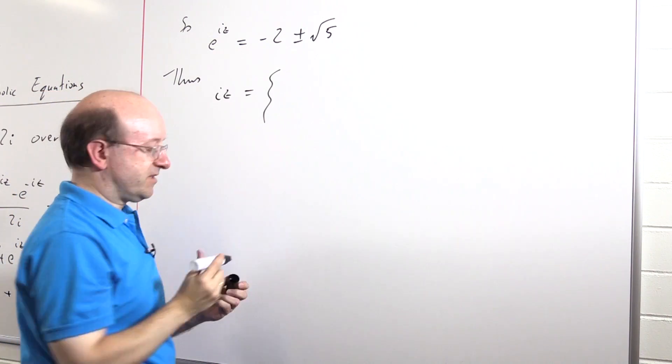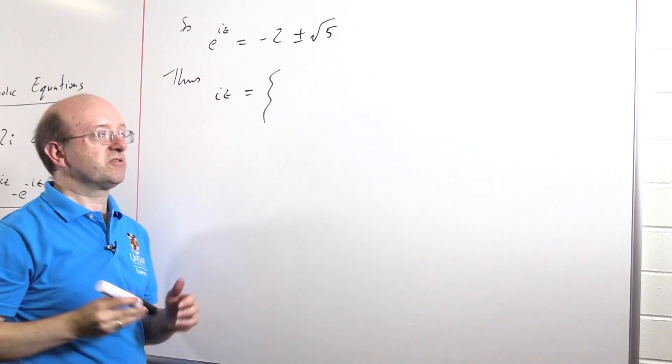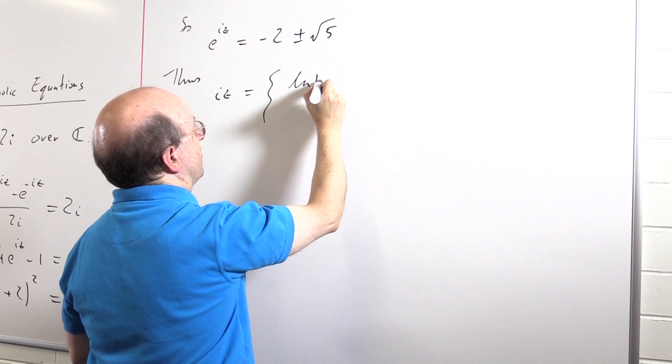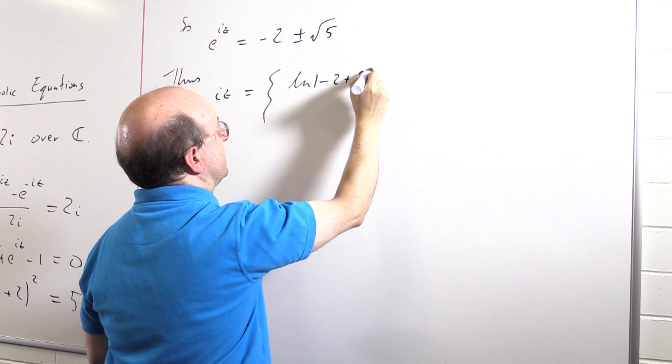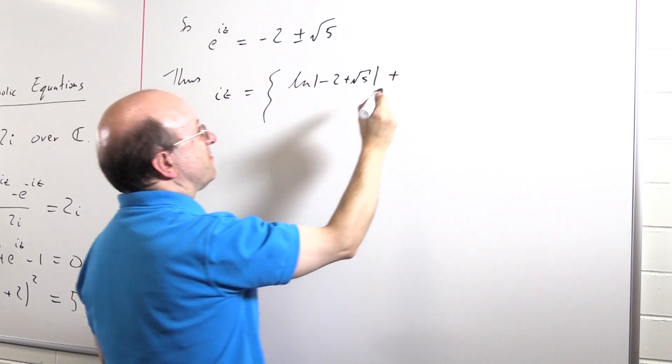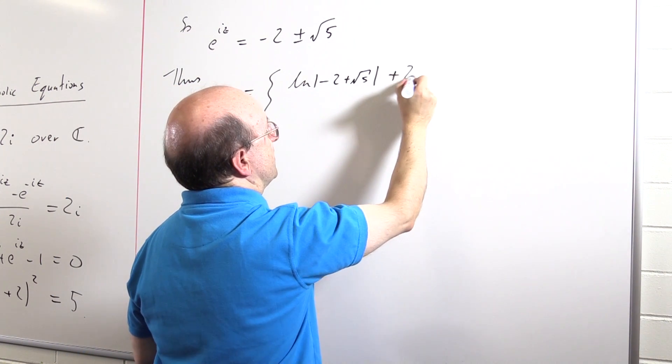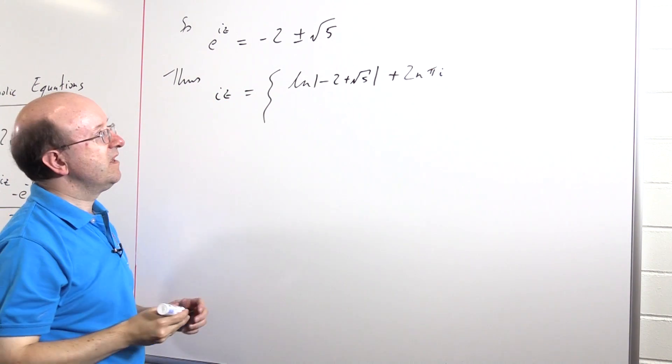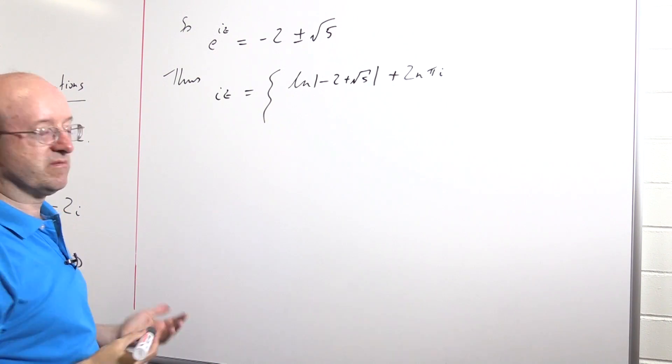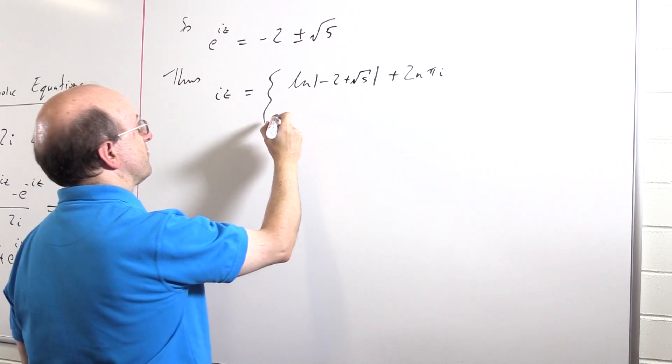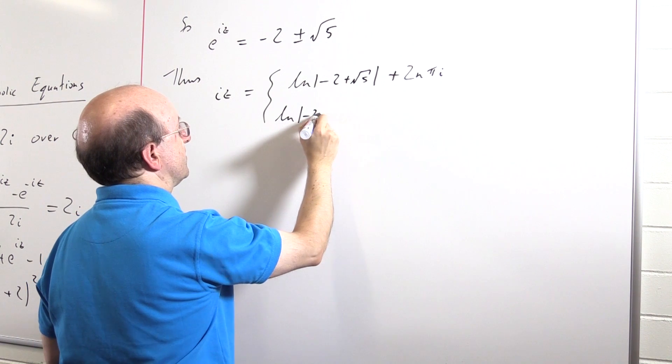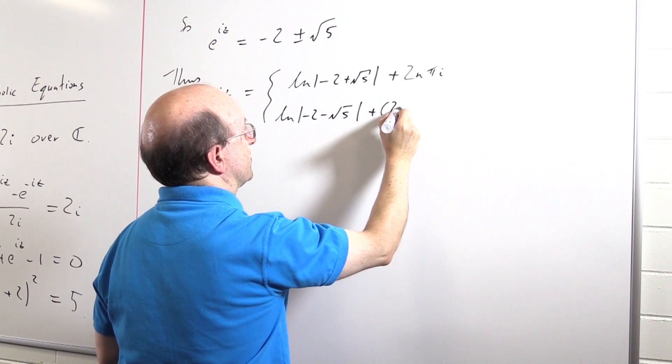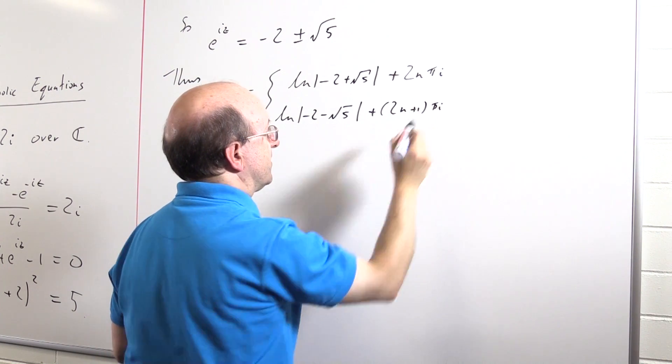iz is, well if we take the plus sign here, minus 2 plus root 5 is positive. So we're going to get the natural log of minus 2 plus root 5, plus, well since this is positive, the argument must be an even multiple of pi. But in the negative case, minus 2 minus root 5 is of course negative, so we're going to get the log of minus 2 minus root 5 plus an odd multiple of pi.